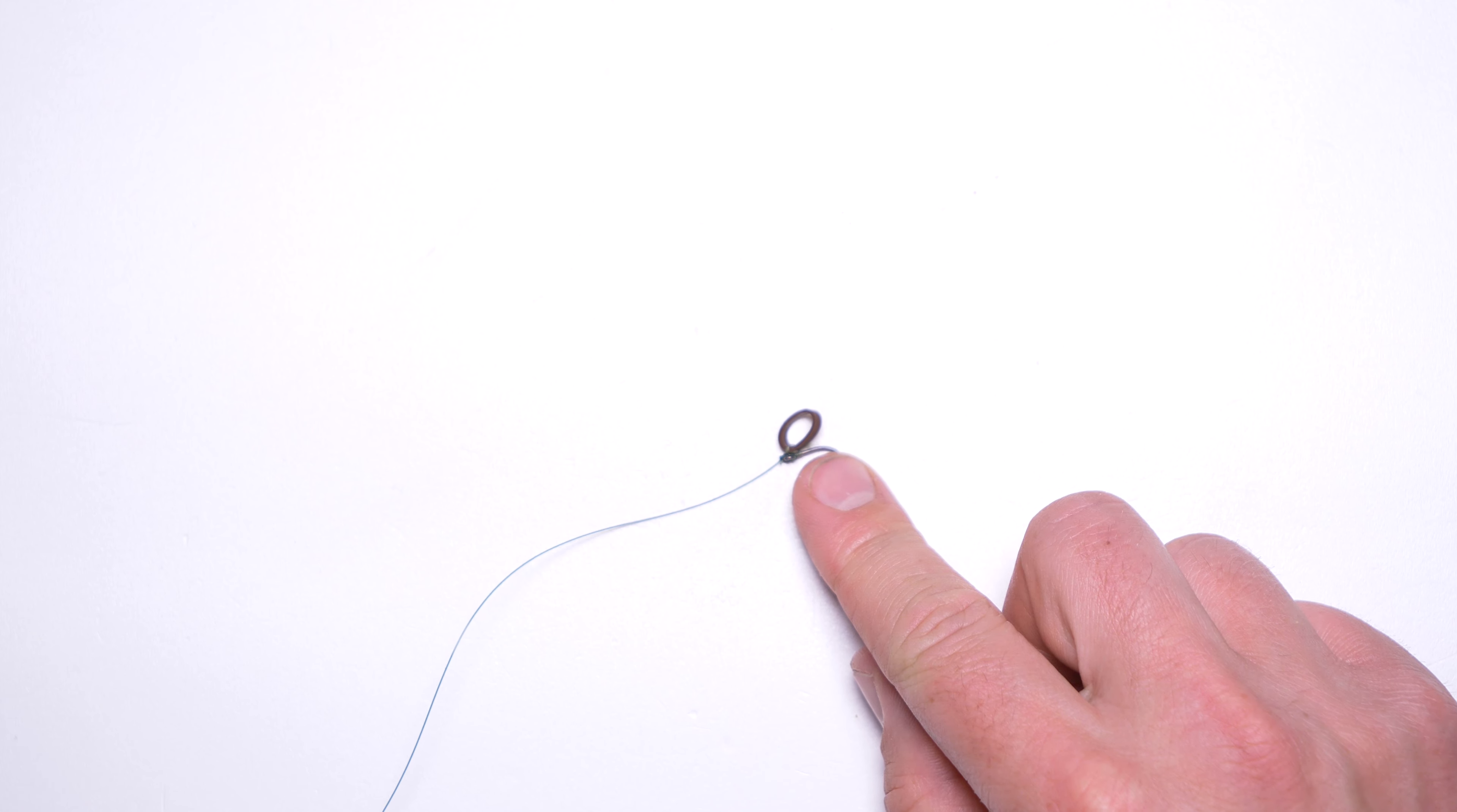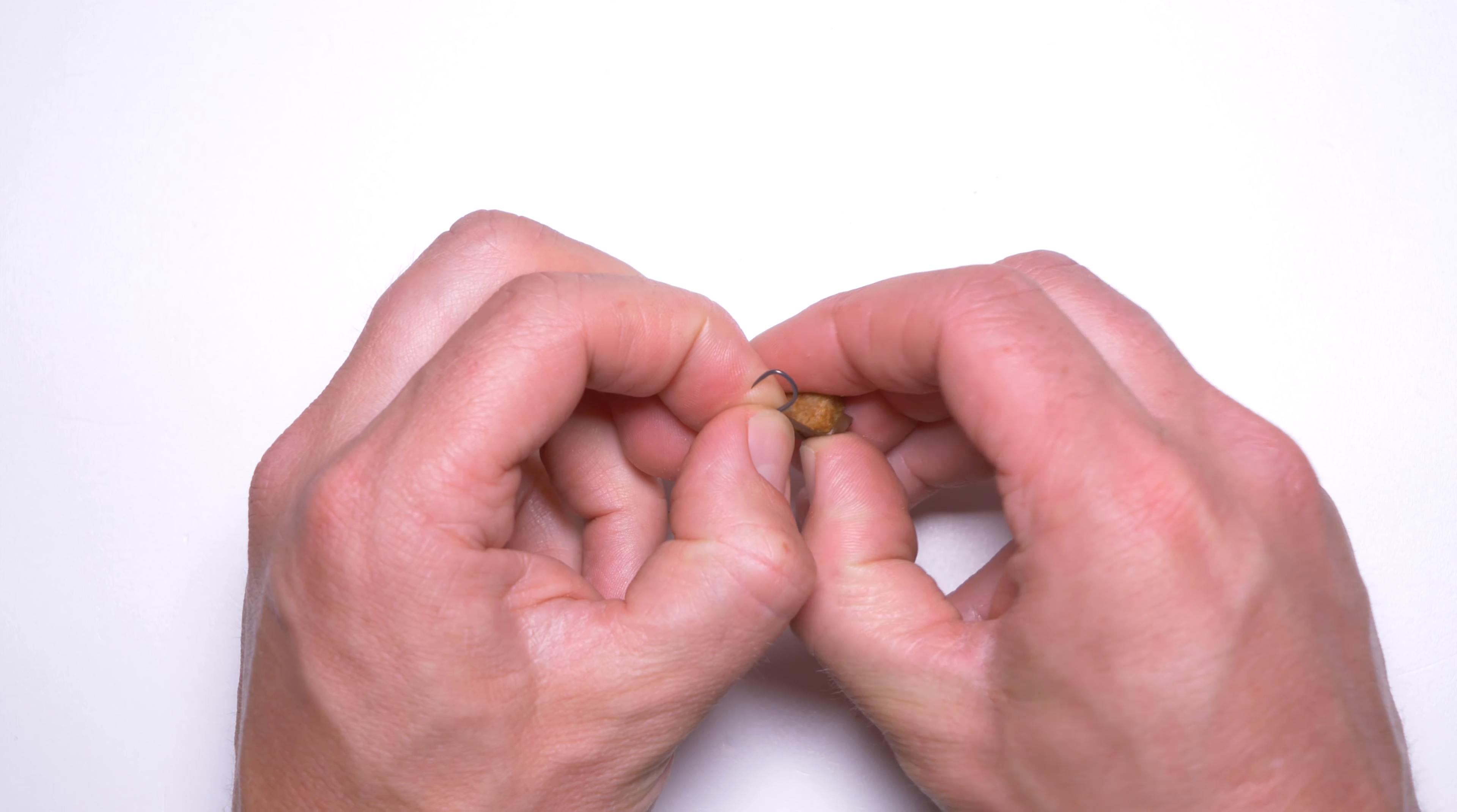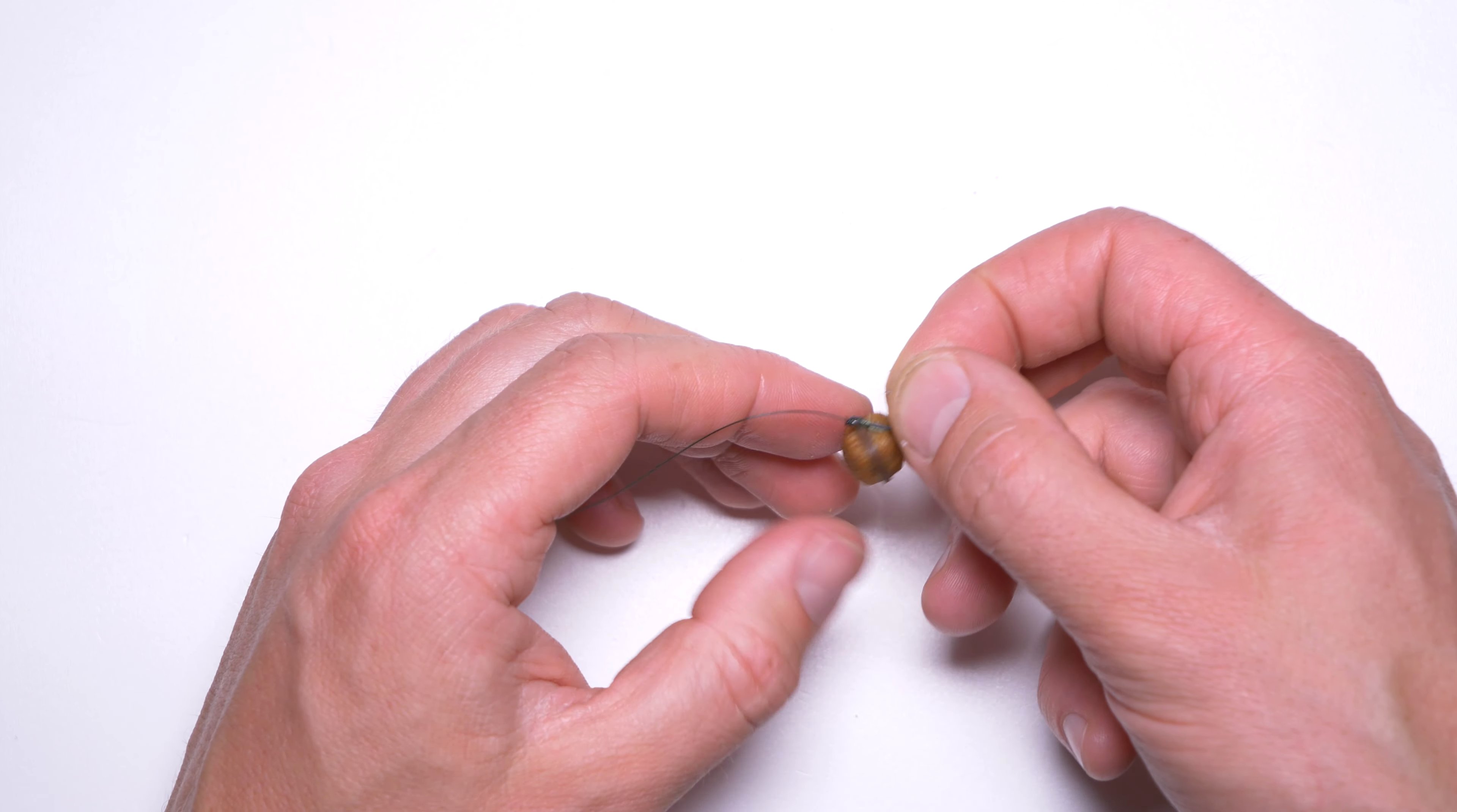Now let's have a quick look at how you can attach your floating hook bait onto that pellet band. The simplest way to have the hook bait or dog biscuit—in this case I have a Pedigree mixer—attached to the pellet band is just to bend it as it was designed to.